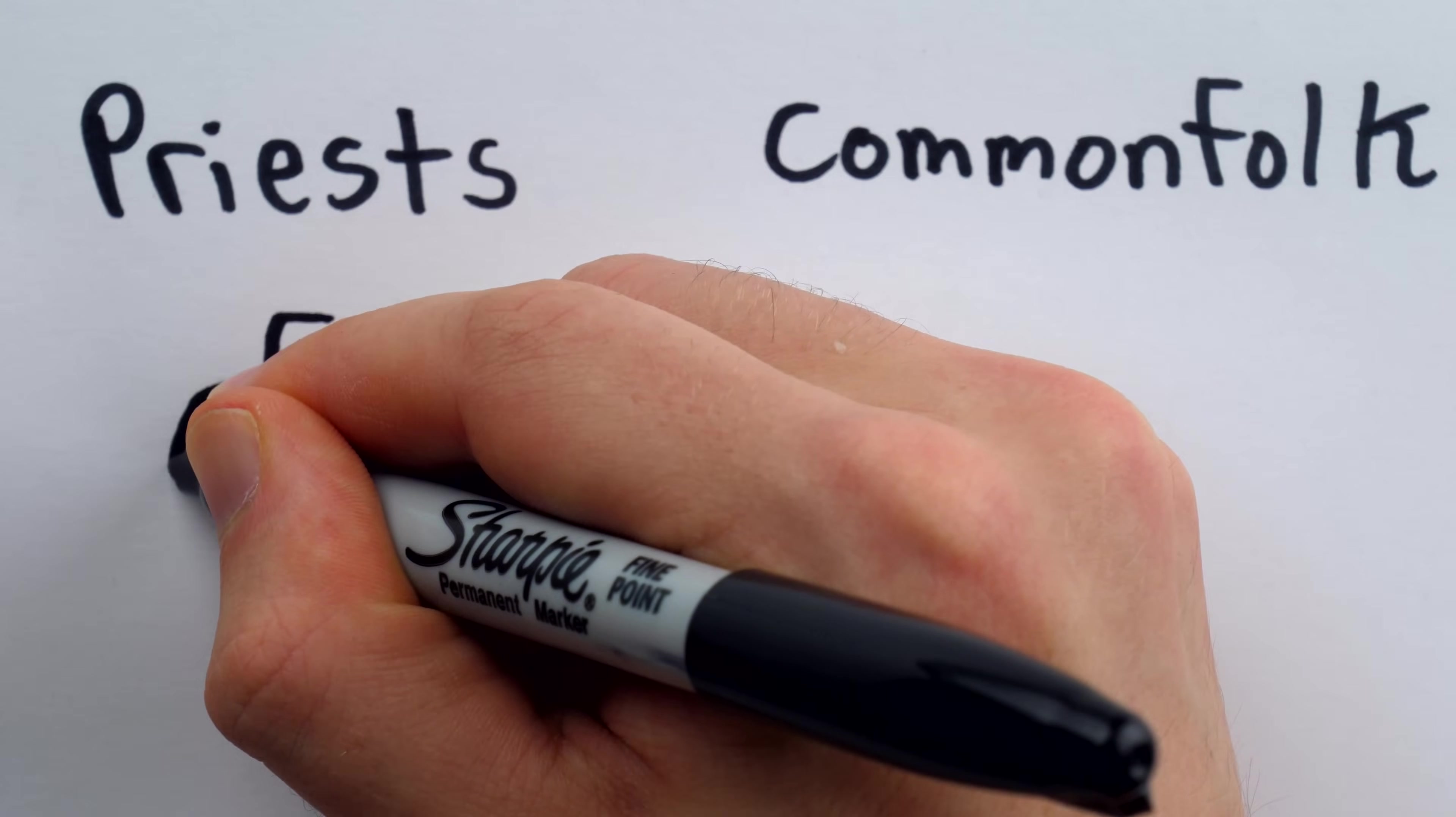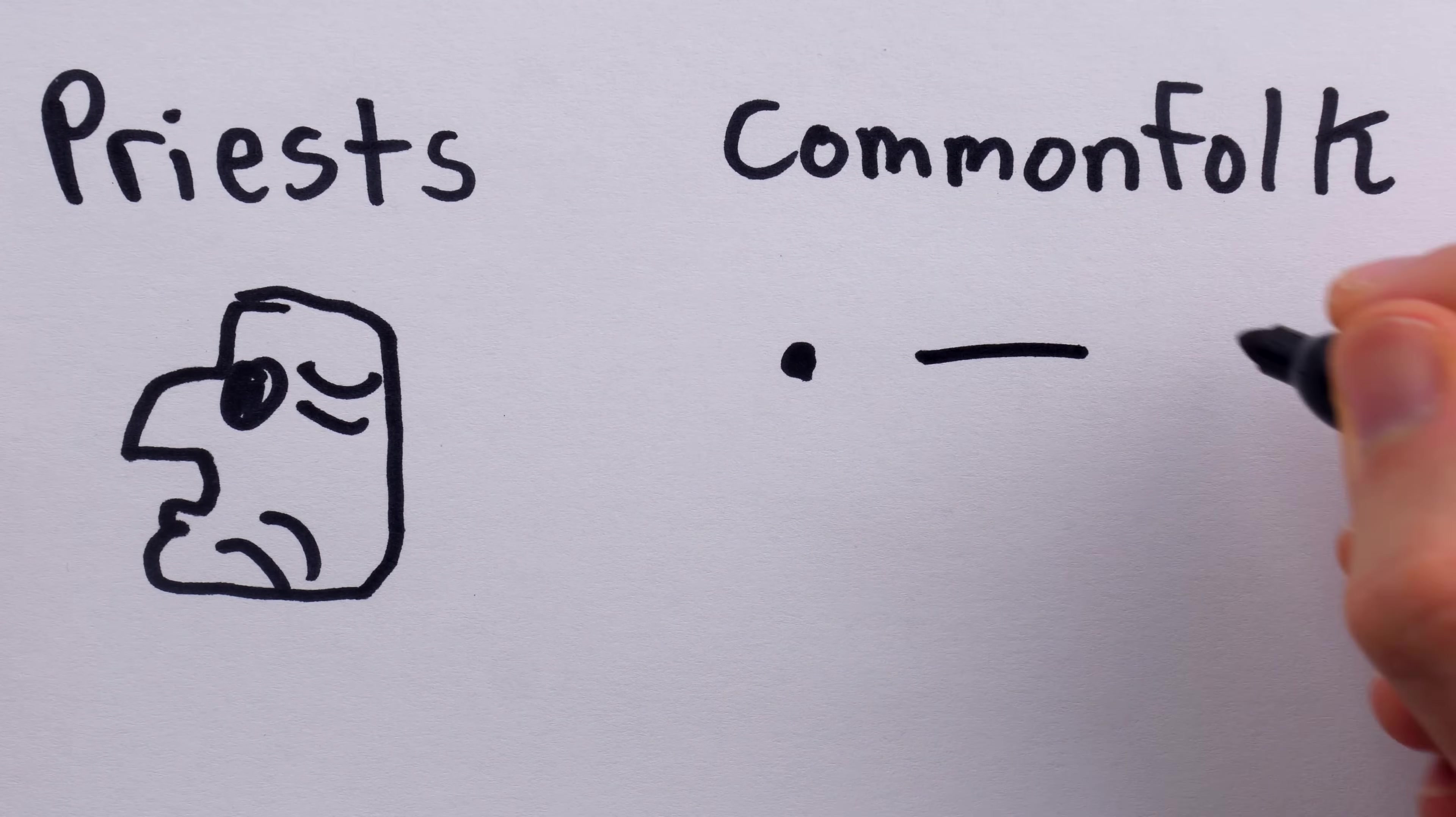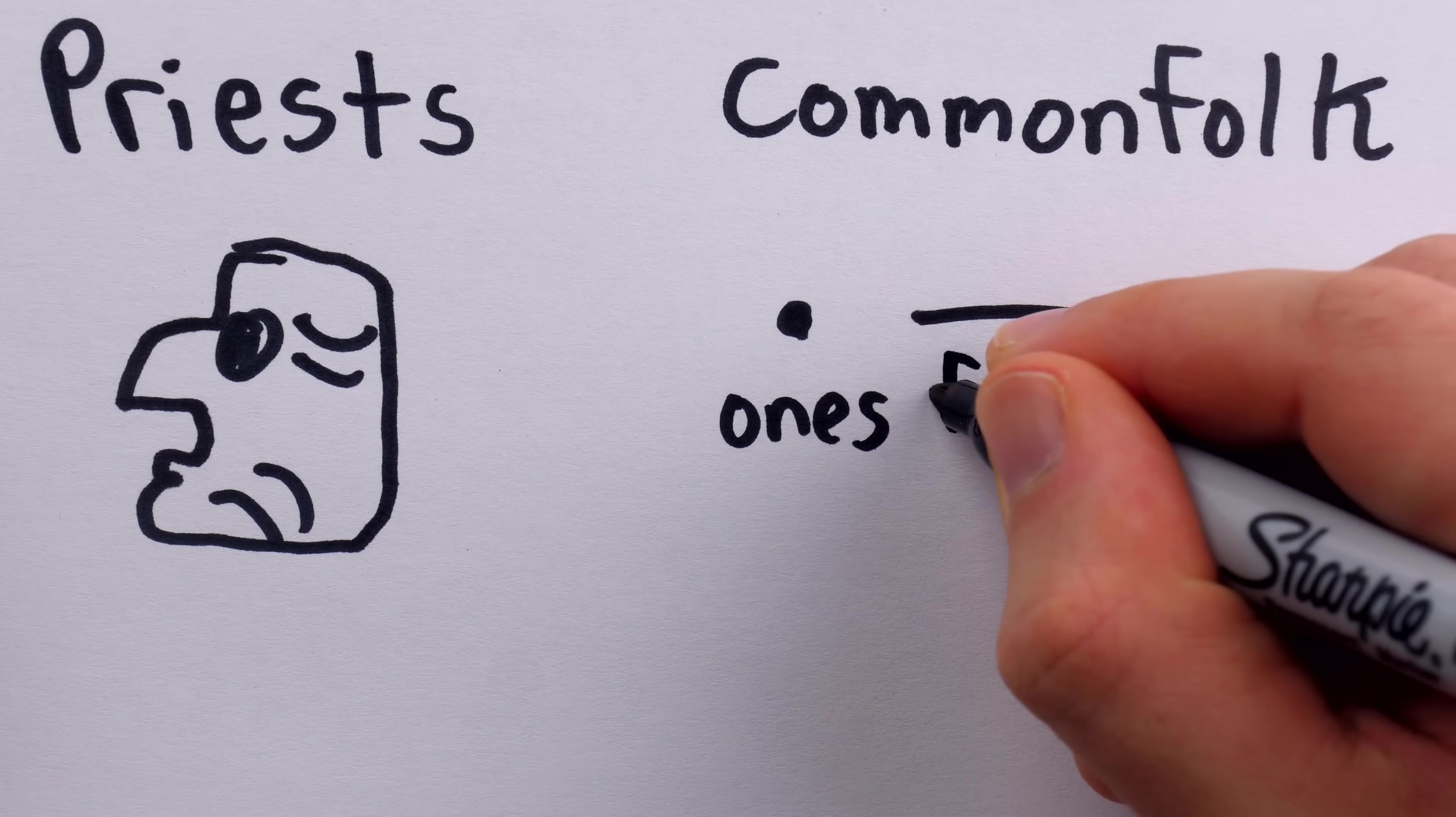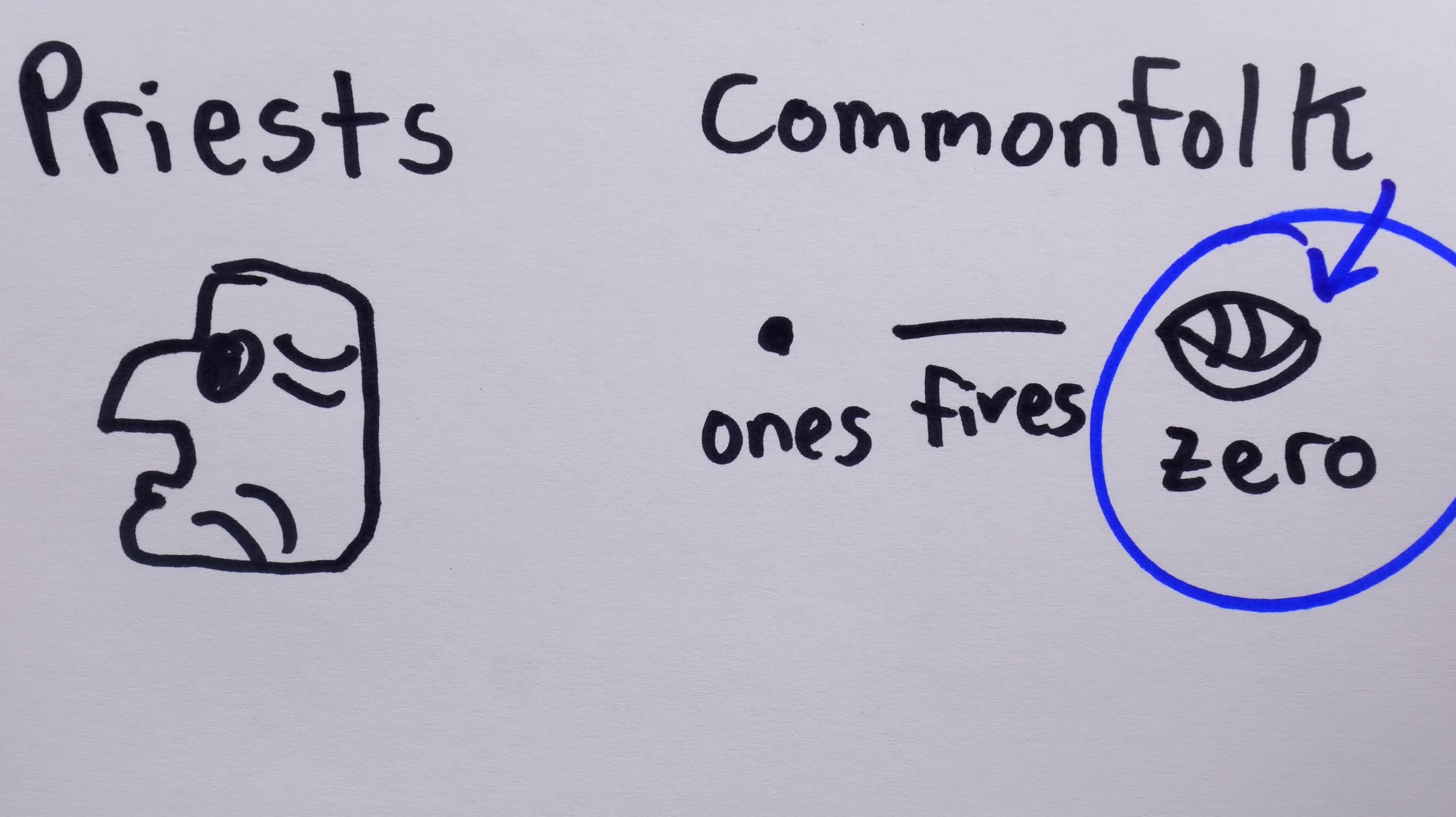Priests would use these pretty horrific-looking faces of gods carved in stone to represent dates, but the common folk had a pretty nice number system consisting of dots, bars, and shells. Here's a look at some of those faces of gods the priest class would have used. I'm certainly relieved that we will not be recreating those today. For the common folk, these simple symbols were enough for the entire number system to work. The dots represented 1s, the bars represented groups of 5, and the shells were the symbol for 0. This is, in fact, one of the earliest, though not the first, instances of a number system having a dedicated symbol for 0.